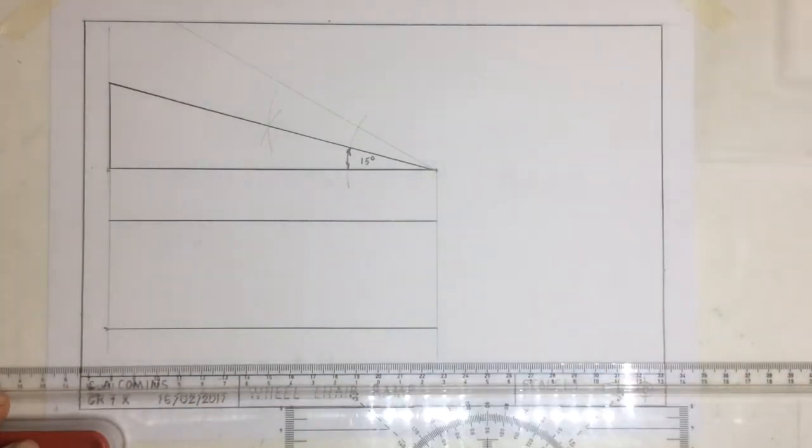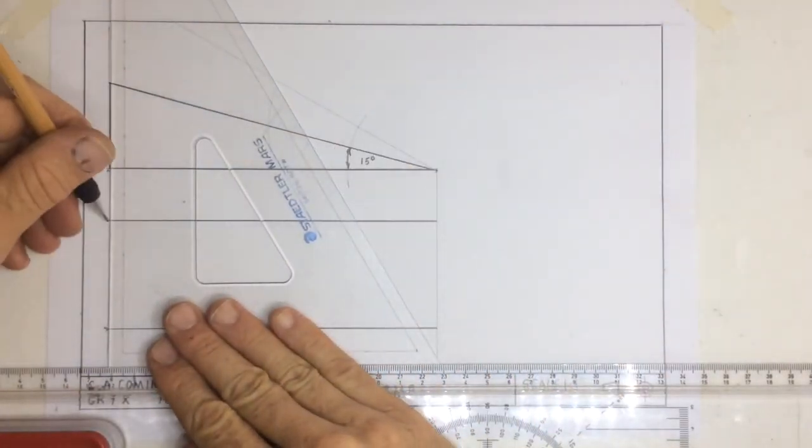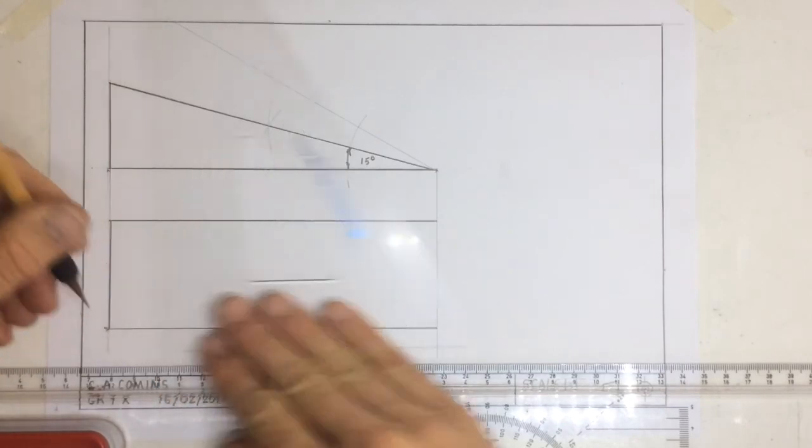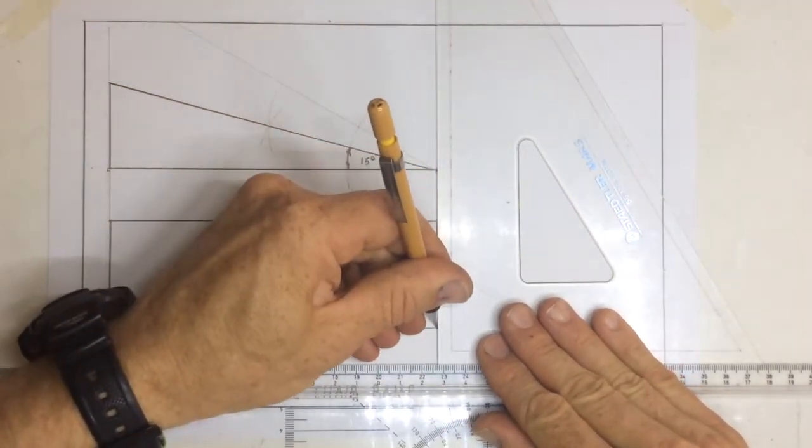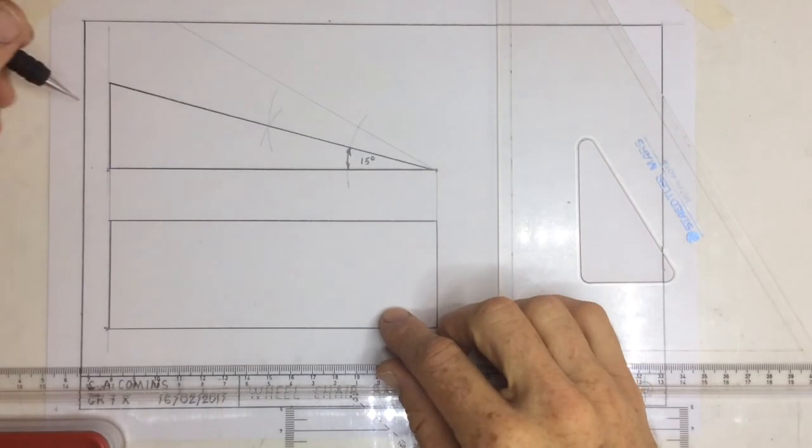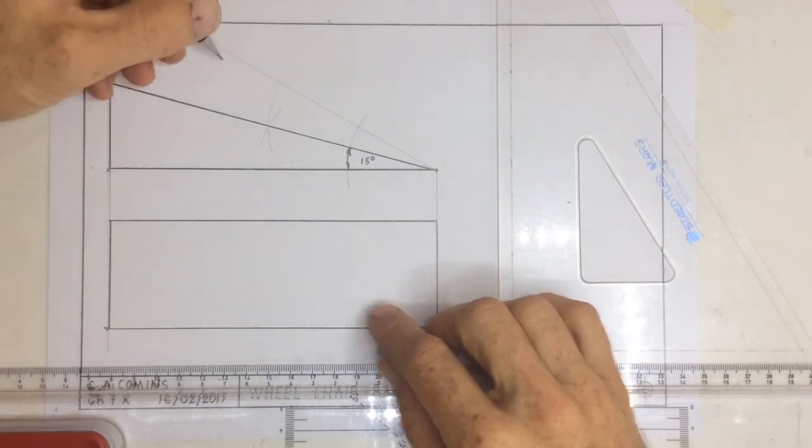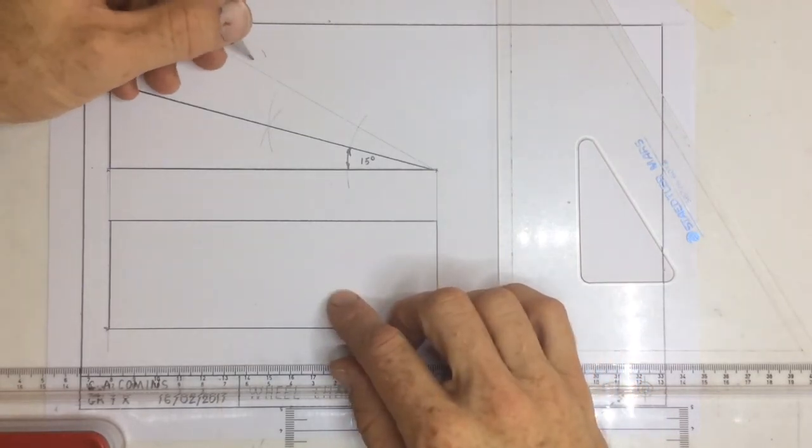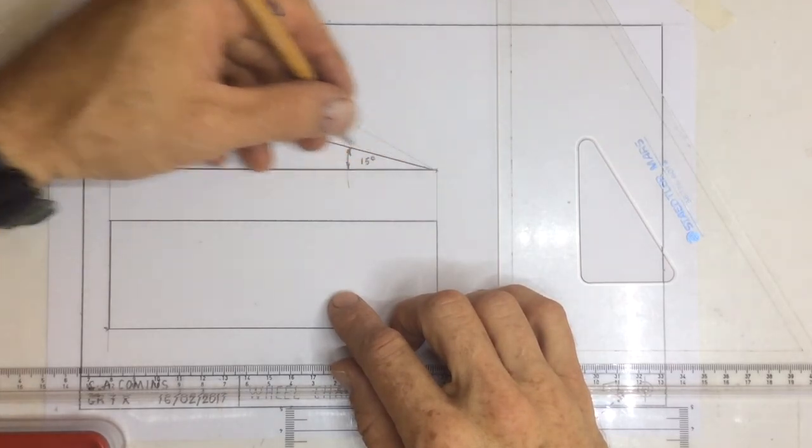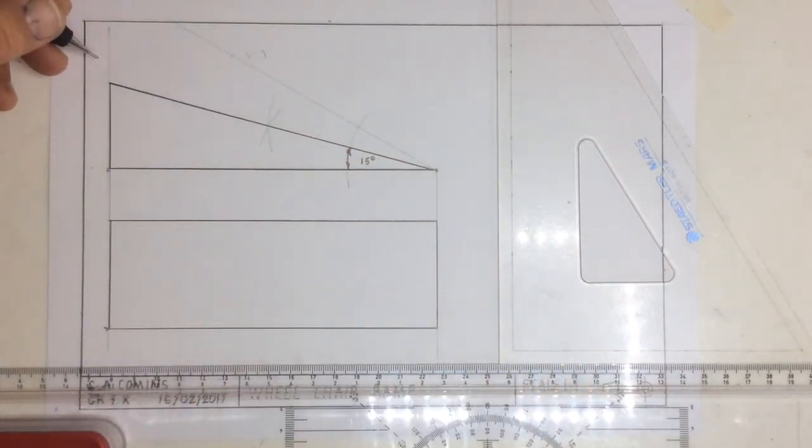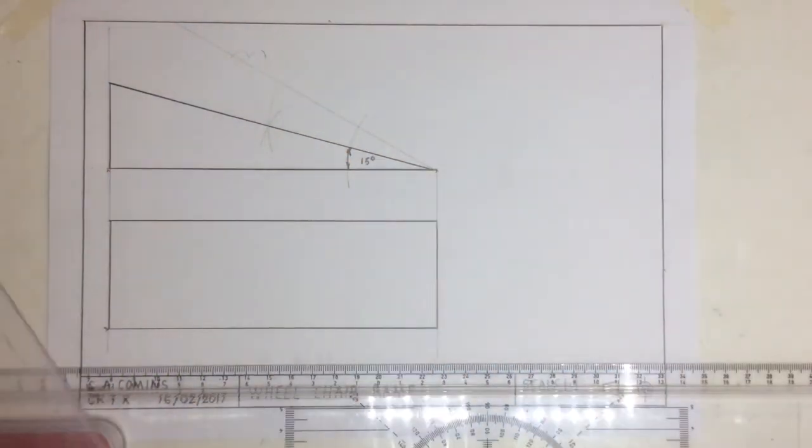I draw a line going across from the construction line to that construction line. I draw a line going in from there to there and from there to there. That is showing me the top of the ramp, so if I was a little bird looking down onto it, I would see the top of the ramp and it would look like that.